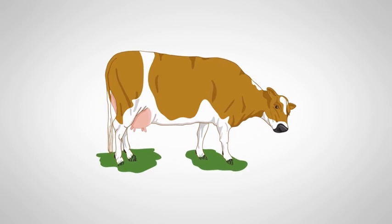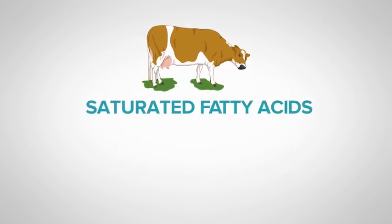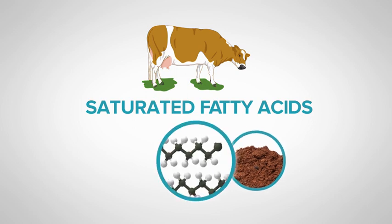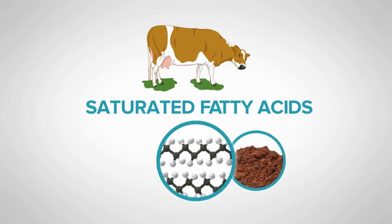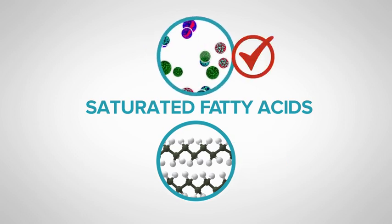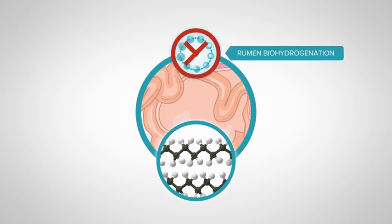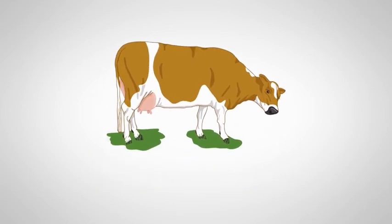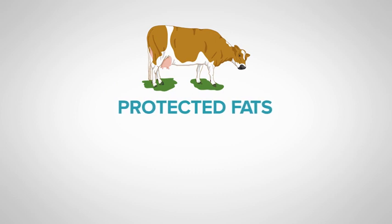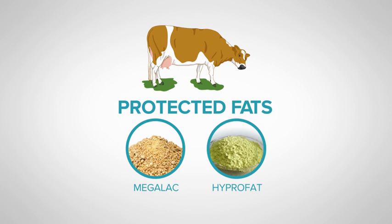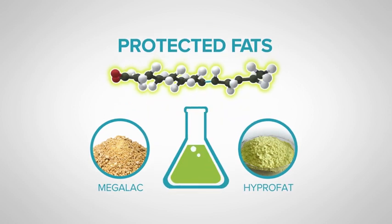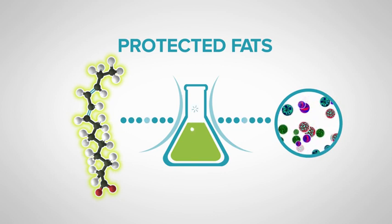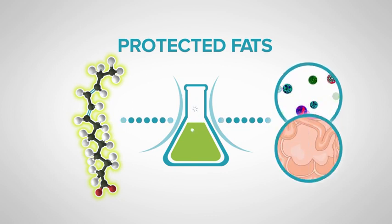If we look at the other types of fats that can be found in the cow's diet, we have the saturated fatty acids. These are generally found in animal fats and also in some by-products such as palm kernel. Because these fatty acids are already saturated and have no double bonds, they are not as toxic to the rumen microbes. This means they do not have to undergo rumen biohydrogenation and can pass through the rumen unaltered. The other type of fat that can be included in the cow's diet is protected fats. Protected fats form the basis of commercial products such as Megalac or Hypofat and consist of fatty acids that have been chemically treated. The chemical treatment helps reduce the interaction between the fatty acids and the microbes, and therefore reduces the negative effect that fat can have on rumen function.